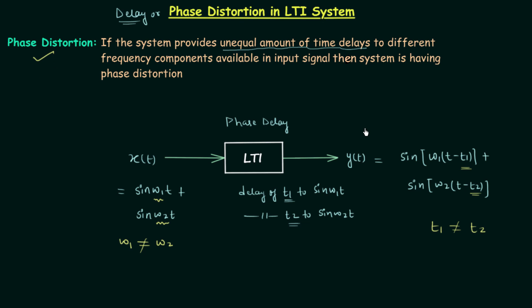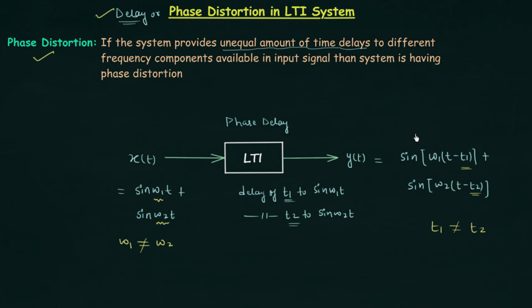So we have completed magnitude distortion and phase distortion. Phase distortion is also known as delay distortion. In the next lecture we will find out the condition for an LTI system to be distortionless.